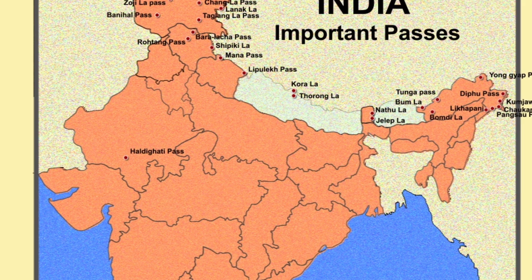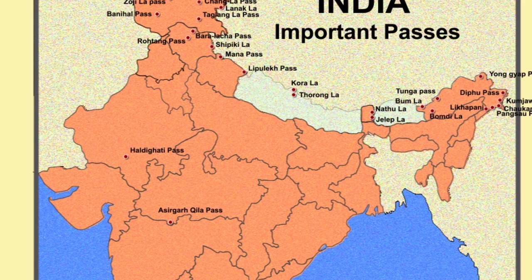The next one is Asirgarh Kila Pass. This pass goes through the Satpuras and it connects Burhanpur and Khandwa districts. It is one of the main routes connecting northern and southern India.